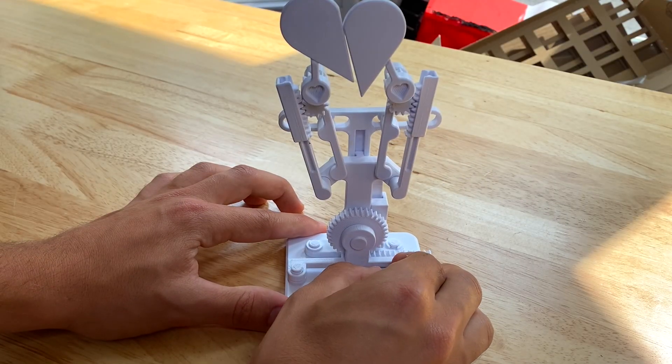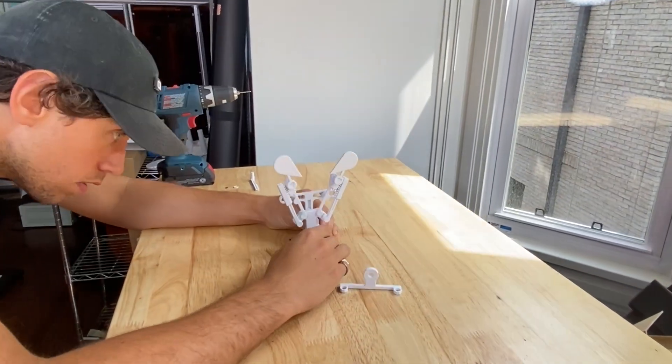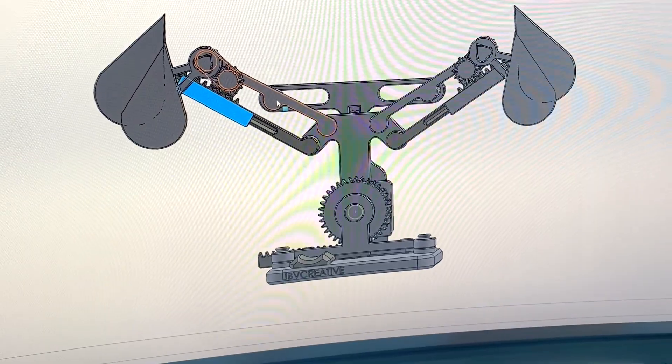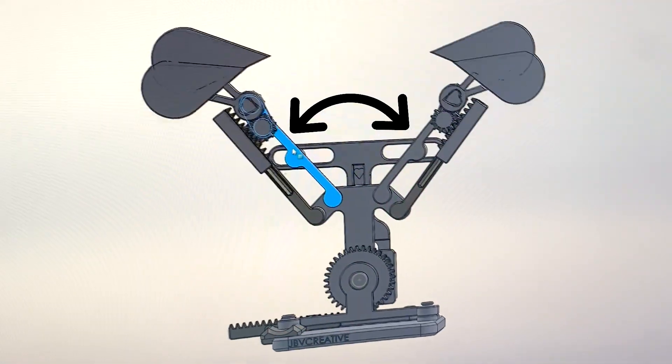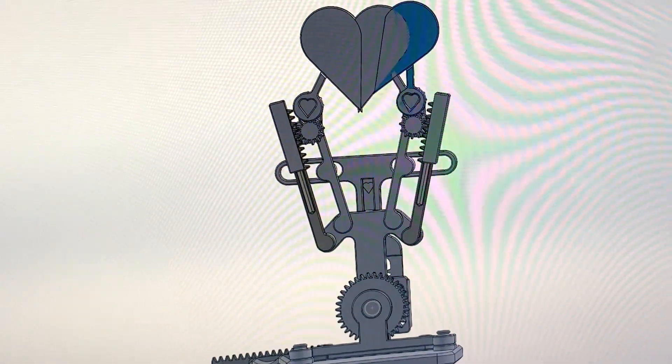It kind of worked but obviously it wasn't quite where it needed to be at this point. So I spent some time fiddling with the sculpture trying to get a better idea of where the problems were coming from. I decided to increase the size of the hearts so there would be a larger angle between the arms when the heart halves come together. Hopefully this will make it so it doesn't get stuck.